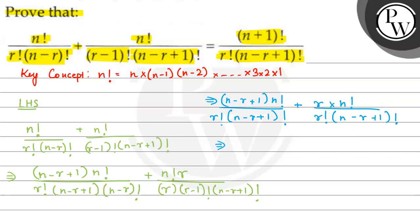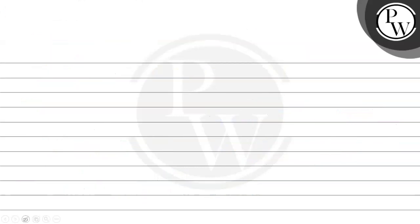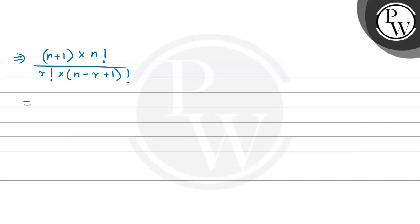Taking the common factor out, we get n factorial upon r factorial multiplied by n minus r plus 1, multiplied by n minus r plus 1, multiplied by n factorial. So, n factorial upon r factorial multiplied by n minus r factorial gives us n factorial multiplied by n plus 1 factorial upon r factorial multiplied by n minus r plus 1.